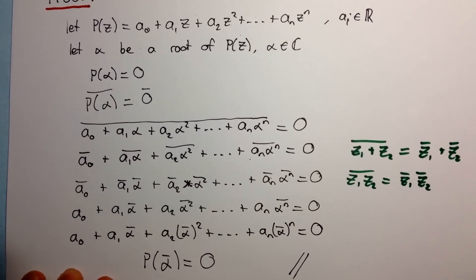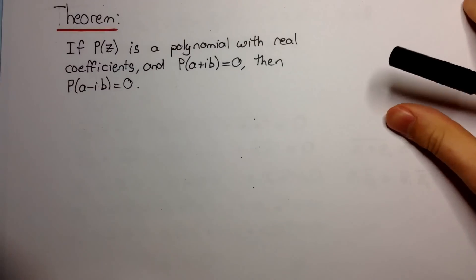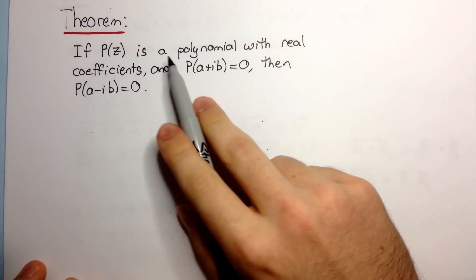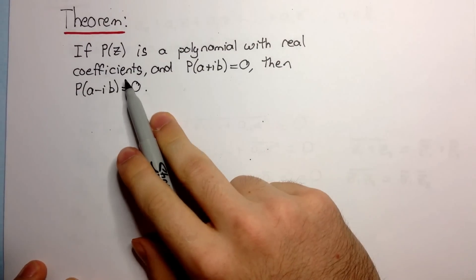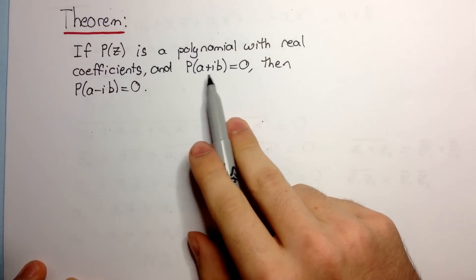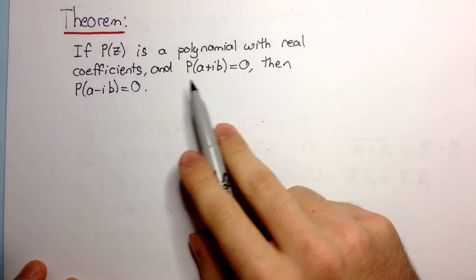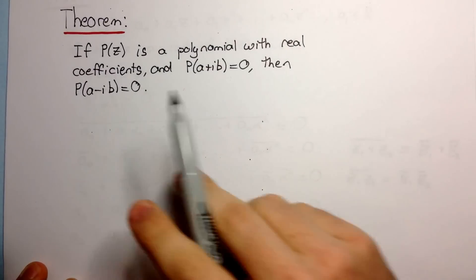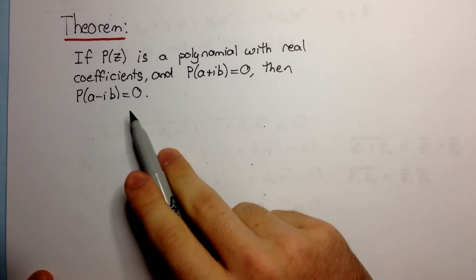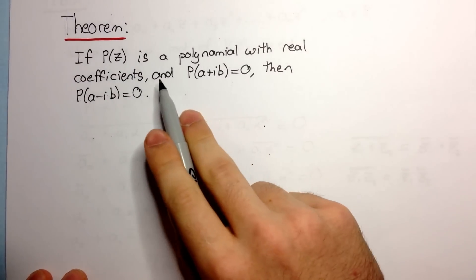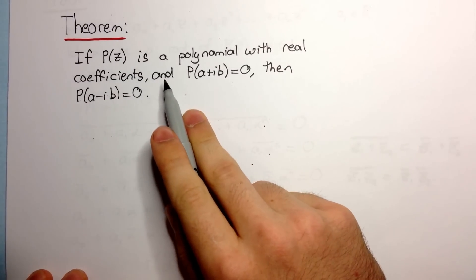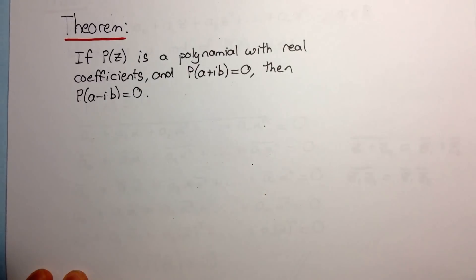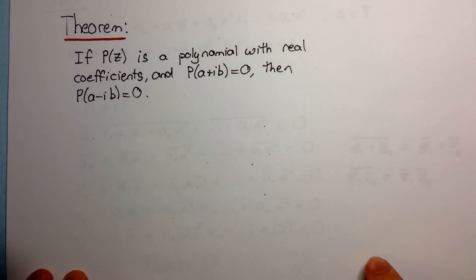Just recapping: the conjugate root theorem says if P of Z is a polynomial with real coefficients and P of A plus iB equals zero, then P of A minus iB equals zero. That means if a polynomial with real coefficients has a complex solution, then its complex conjugate is also a solution.